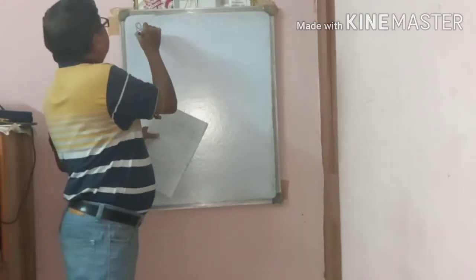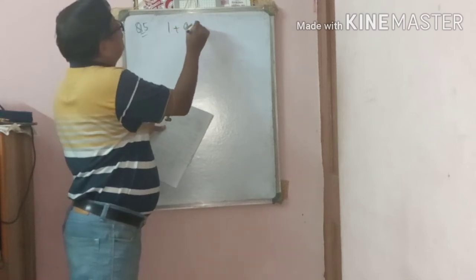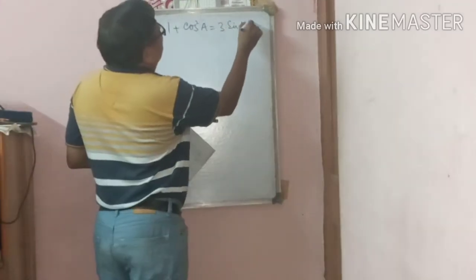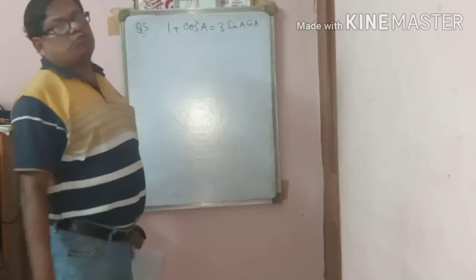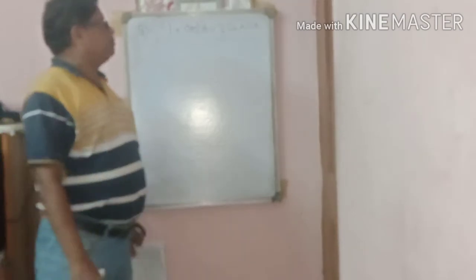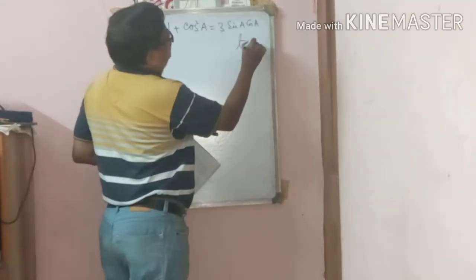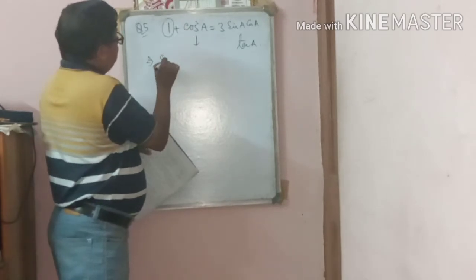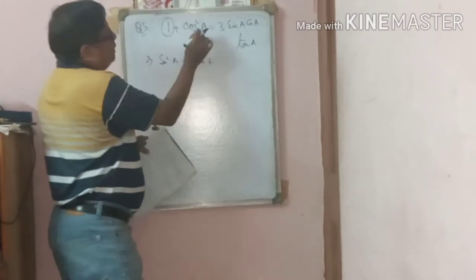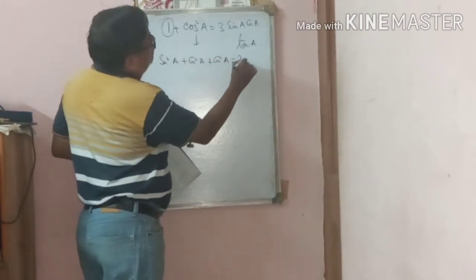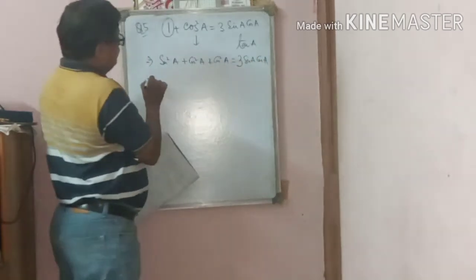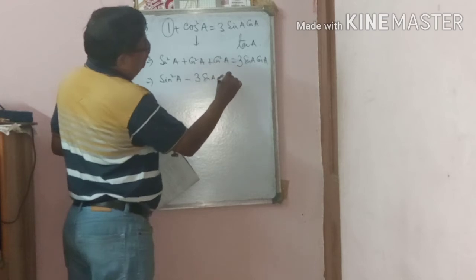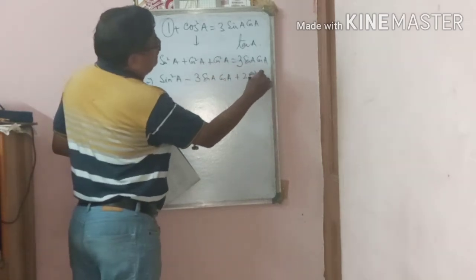Question number 5: Given 1 + cos²a = 3·sinA·cosA, find the value of tanA. We know 1 = sin²a + cos²a, so write: sin²a + cos²a + cos²a = 3·sinA·cosA, which gives sin²a + 2cos²a = 3·sinA·cosA.